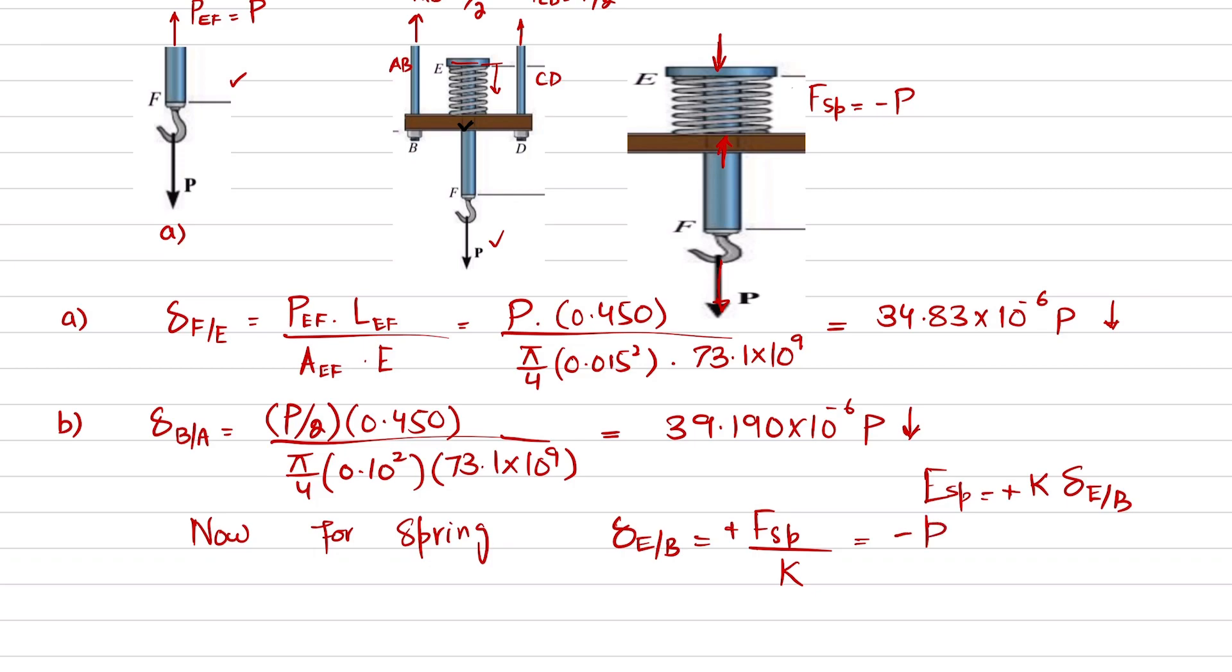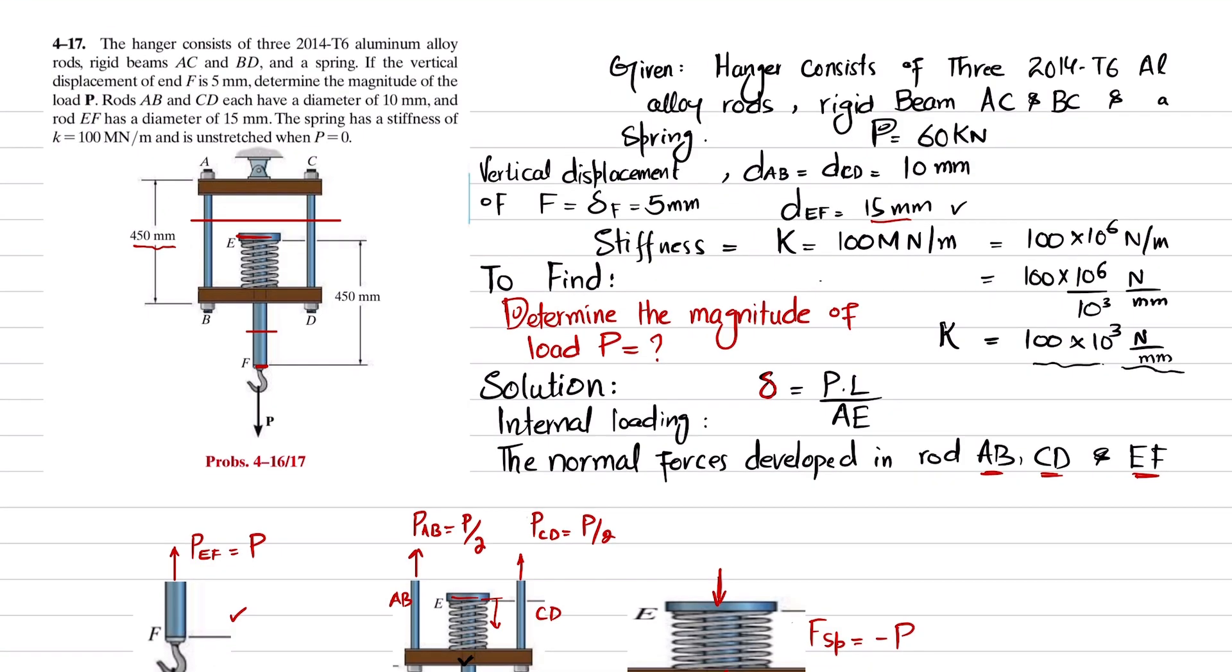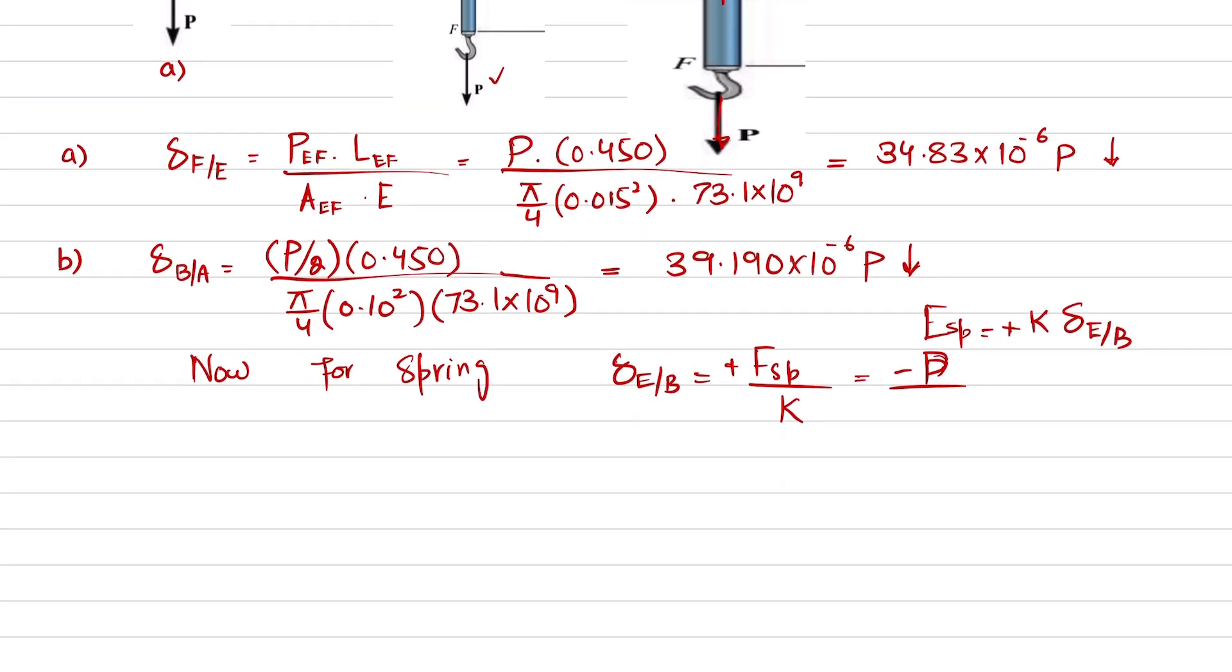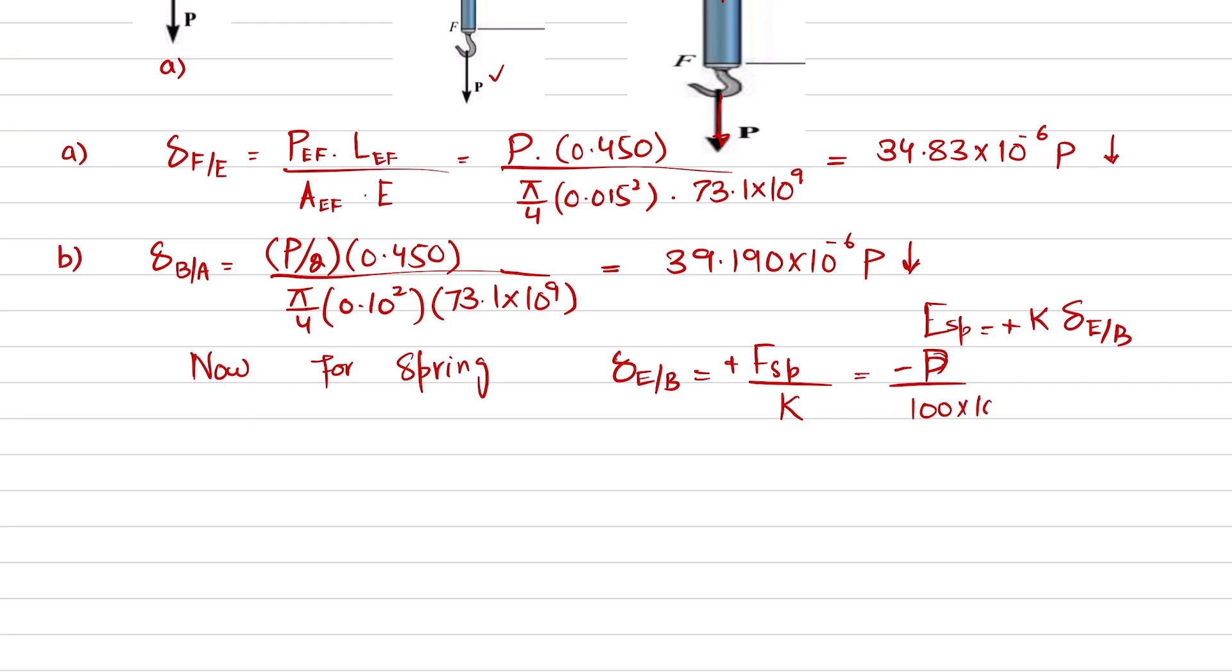F_spring is minus P, so minus P divided by K, which is given as 100 meganewtons per meter. So in newtons per meter, it is 100 × 10⁶. Change of E with respect to B comes out to be 10 × 10⁻⁶ times P, and this will also move downward.